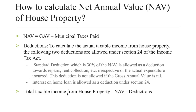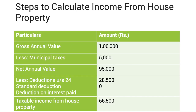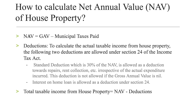To calculate the net annual value, there is only one formula: gross annual value minus municipal taxes paid. For example, if the gross annual value of the house property is 1 lakh rupees and the total municipal taxes paid is 5,000 rupees, then net annual value equals 1 lakh minus 5,000 rupees, which gives us 95,000 rupees. So 95,000 rupees would be the net annual value.